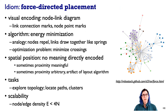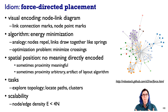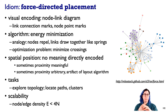A very common node-link approach is an idiom called force-directed placement, which is a whole family of algorithms. They use point marks for nodes and connection marks to connect nodes through explicit links. The approach uses an extended metaphor of energy minimization — nodes have repelling forces, links draw together like springs — and it's treated as an optimization problem to minimize things like edge crossings or edge-node overlaps.